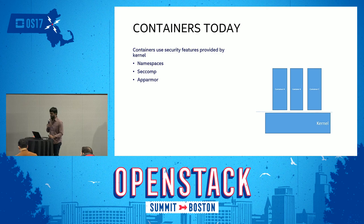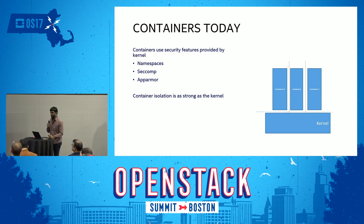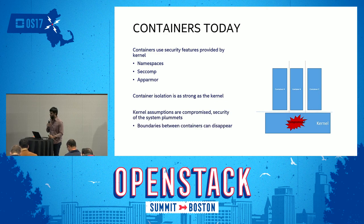There are technologies — namespaces, seccomp, AppArmor, and a few others provided by the kernel — that provide a barrier of protection between containers. But container isolation is only as strong as the kernel. If the kernel is compromised, the boundaries between containers can disappear, meaning we lose isolation entirely.